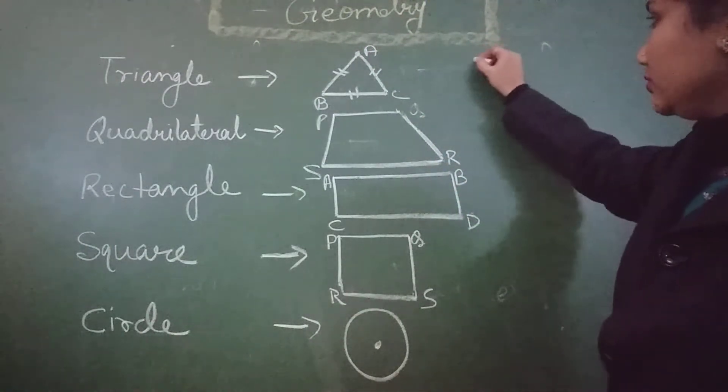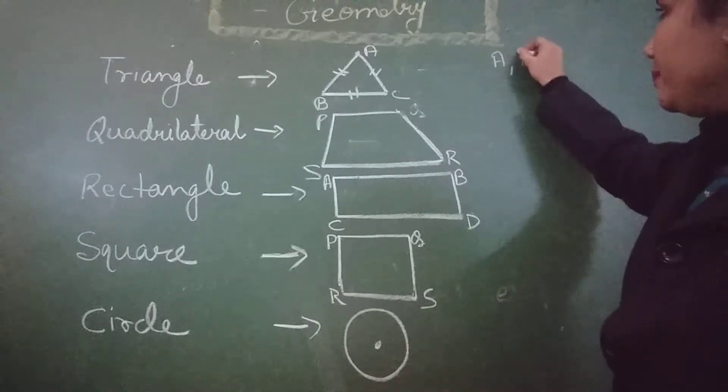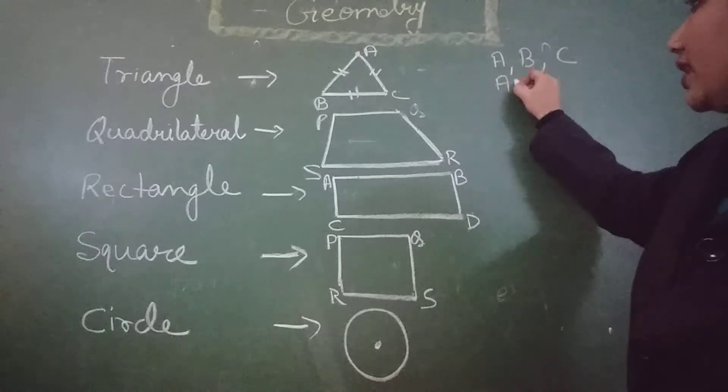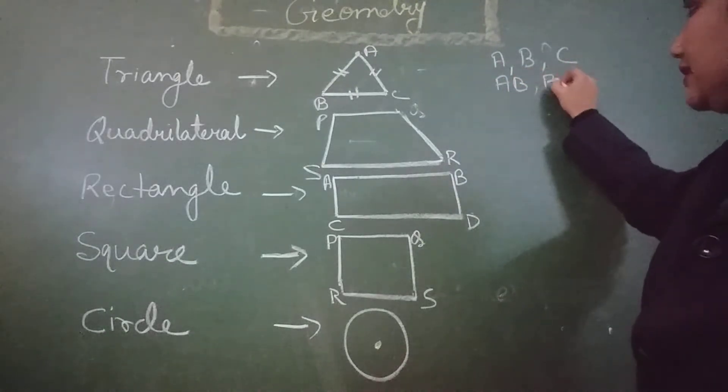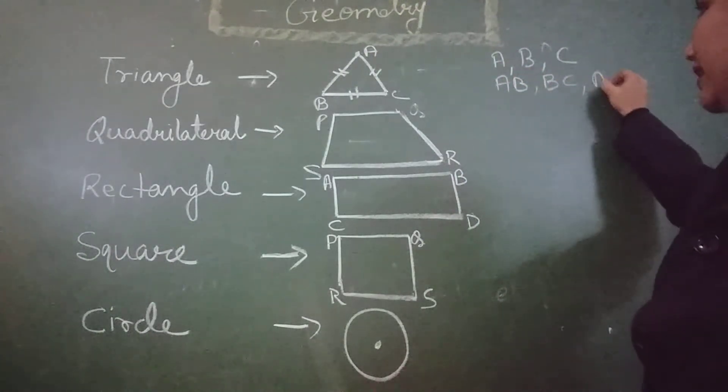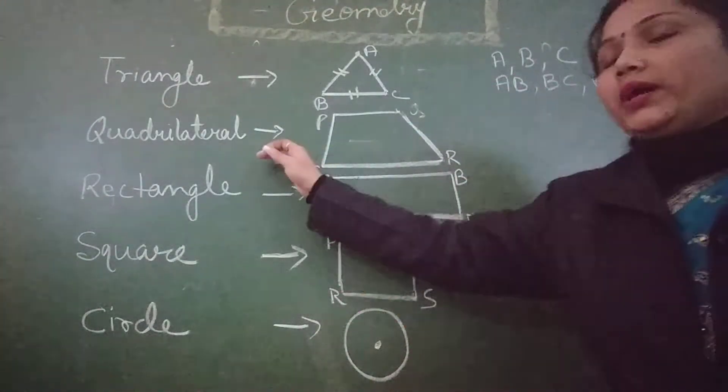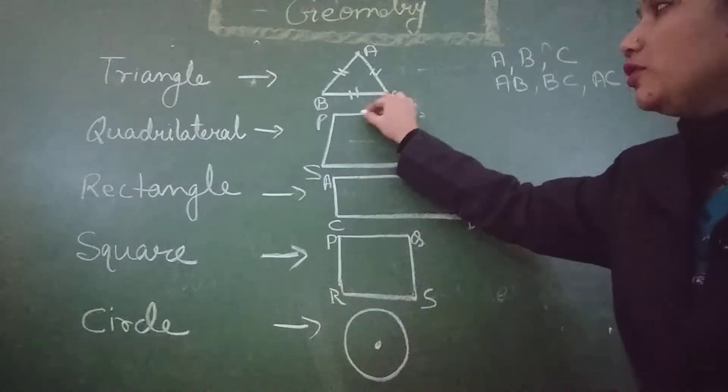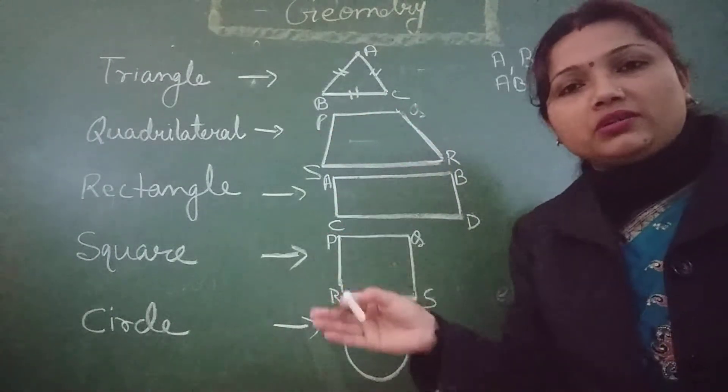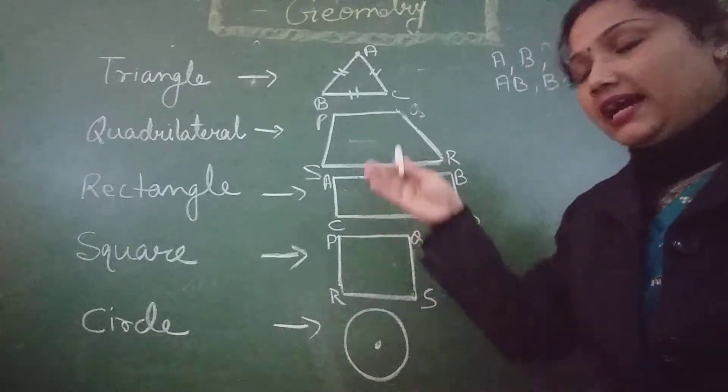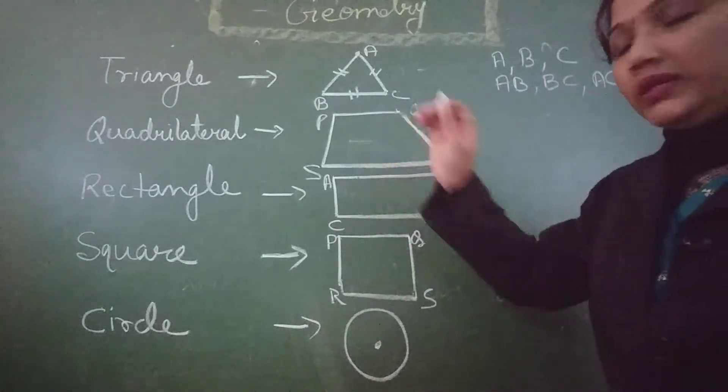Here I am writing corners A, B and C. And the sides are AB, BC and AC. Quadrilateral. A figure which is bounded by four line segments is known as quadrilateral. Again, in quadrilateral, these are the vertices. It has four vertices.